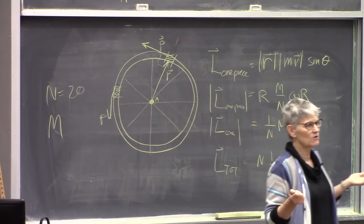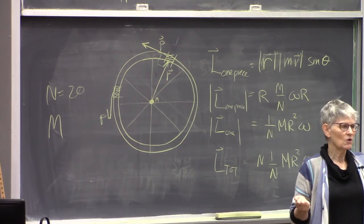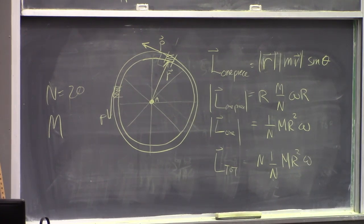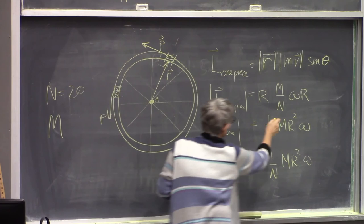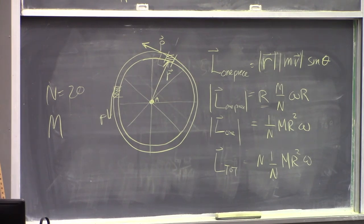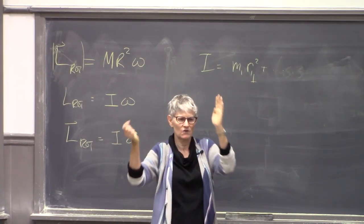We won't spend much time calculating moments of inertia because it's essentially a mathematical exercise — in recitation and on tests, moments of inertia will be given to you. The key point is that the r in the moment of inertia expression is a perpendicular distance to the axis of rotation. For a sphere, what goes into the sum is the distance from each piece to the rotation axis, not to the center of the sphere.